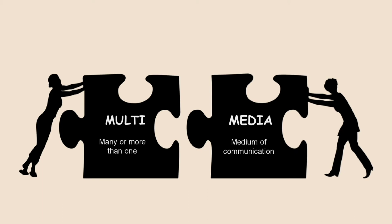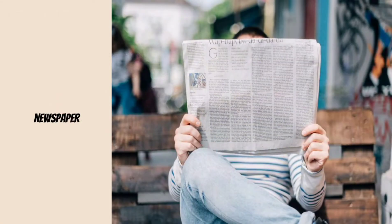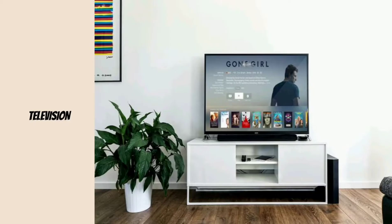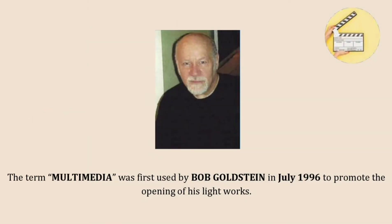A multimedia includes the combination of text, audio, still images, animation, video, and interactive content forms. We could see the media evolution from newspaper, telephone, motion pictures, radio, television, cable television, as well as the internet.